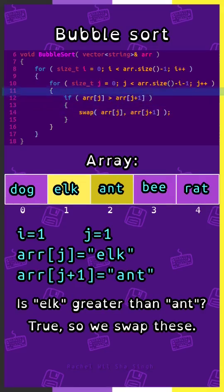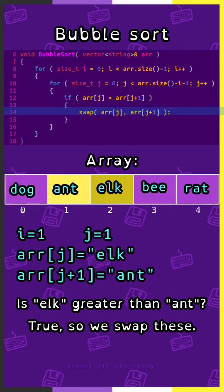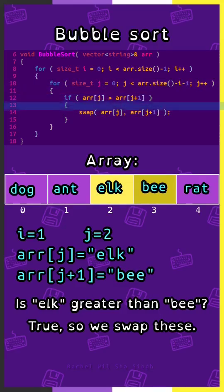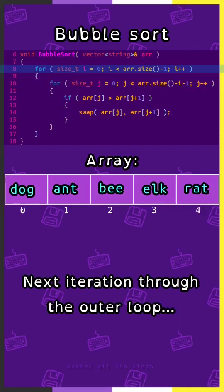j is 1. Is elk greater than ant? True. Swap. j equals 2. Is elk greater than b? True. Swap. Next iteration through the outer loop.